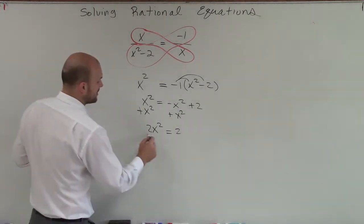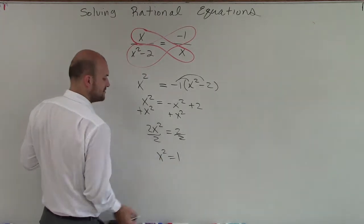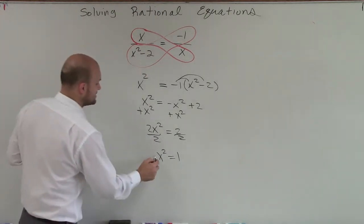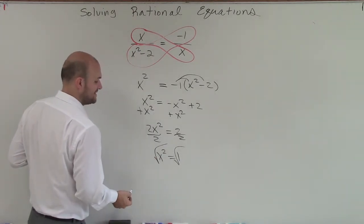Now I need to solve for x, so I need to apply my inverse operation. I divide by 2 and I get x squared equals positive 1. Now I need to undo the squaring function by taking the square root.